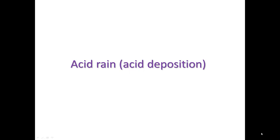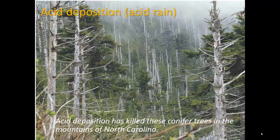Okay, part two here. Let's take a look at acid rain, also called acid deposition or acid precipitation. Here we see a forest with trees that are dying or suffering from acid rain in the mountains of North Carolina.